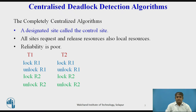Several problems of this algorithm, such as large response time and congestion of communication links near the control site, can be mitigated by having each site maintain its resource status locally and by having each site send its resource status to a designated site periodically for construction of the global wait-for graph and detection of deadlocks.